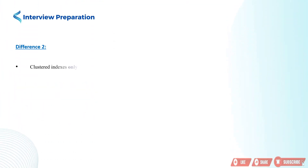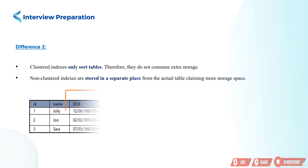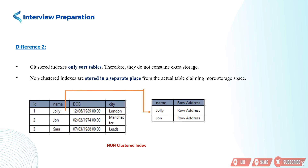Difference 2: Clustered indexes only sort tables. Therefore, they do not consume extra storage. But non-clustered indexes are stored in a separate place from the actual table, claiming more storage space.